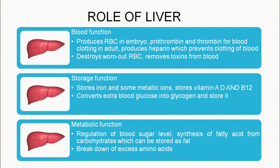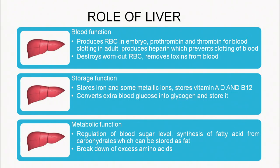The liver is a very important organ and gland in the human body. It performs various blood, storage and metabolic functions. Its blood functions include the production of RBCs in an embryo only — after birth, RBCs are produced in the bone marrow. Prothrombin and thrombin, which help in the clotting of blood in adults, are produced in the liver. It also produces heparin, which prevents the clotting of blood. The liver destroys worn-out RBCs and removes toxins from the blood.